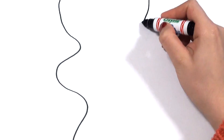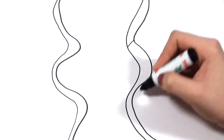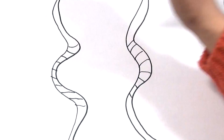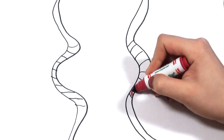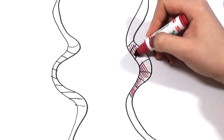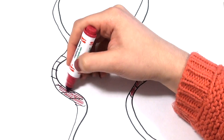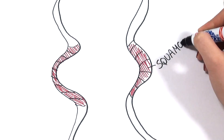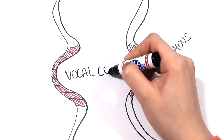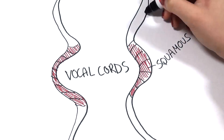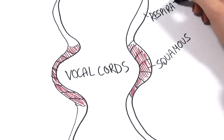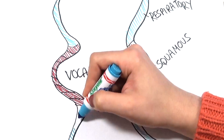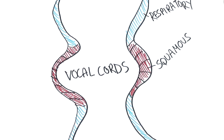The biopsy will be assessed for characteristic changes of laryngeal cancer. 95% of laryngeal cancers are squamous cell, and squamous cell is the cell type that covers the vocal and vestibular folds. Above and below these, the larynx is lined by ciliated respiratory epithelium.